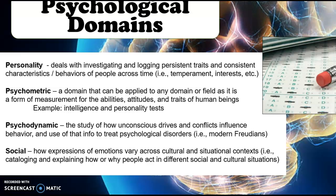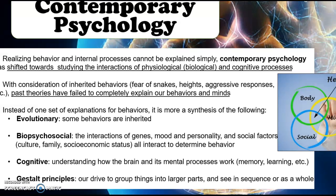And then social — how expressions of emotions vary across culture and situational context. A fascinating documentary on this is 'Amanda Knox' on Netflix. Amanda Knox is an American studying in Italy who is accused of murder. When interviewed, she had a smirk and didn't cry, and because she didn't exhibit social cues deemed normal by Italian investigators, they thought she committed the murder. It's a great example of social psychology and how behavior and emotional expression relate to cultural context.